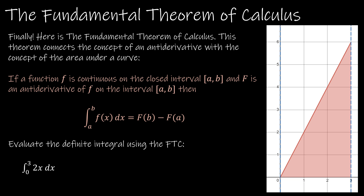I have it written in a different color here. F is a continuous function on the closed interval a, b, and capital F is an antiderivative of f on the interval a, b. So if I want to find the area under a curve on the interval from a to b, all I have to do is take the antiderivative and evaluate it at the lower and upper limits. Let's recall what this area was using a geometric formula.